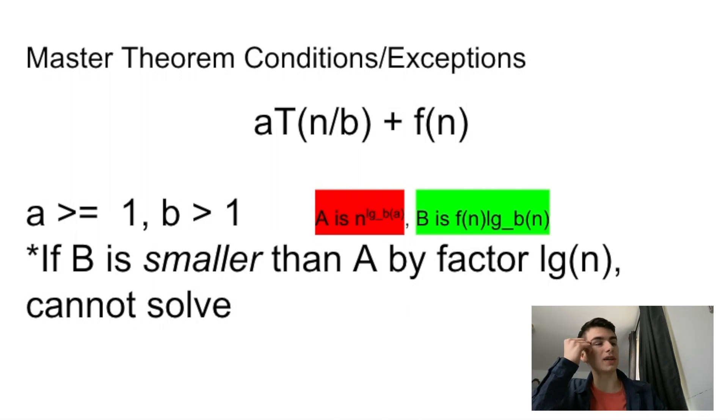And another interesting thing is that if big B is smaller than A, then big A by a factor of log n, you cannot use master theorem. Like, if f(n) was one over log n, is what I'm saying.